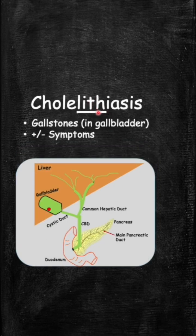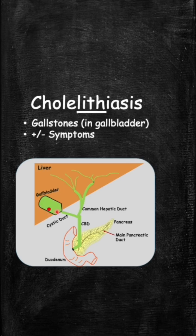The first term is cholelithiasis. Litho means stone, so this literally means gallstones — and we usually see this in the gallbladder. Cholelithiasis just means someone has gallstones in their gallbladder. These patients may not have any symptoms, so this can be an incidental finding, or they may have symptoms depending on where the stone gets obstructed.